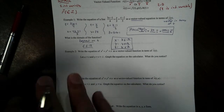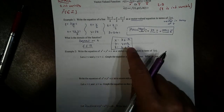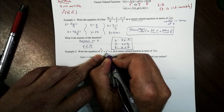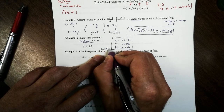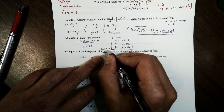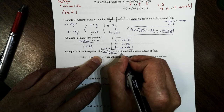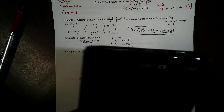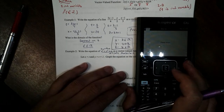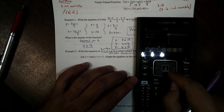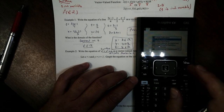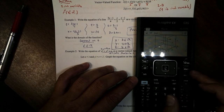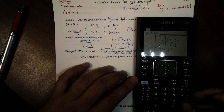Let's talk about how we can write a surface as a vector equation. This equation — x squared plus y squared plus z — is a surface; you might remember it as an elliptic paraboloid. Let me graph this. I'll open a new 3D graph, type in z equals x squared plus y squared, press enter, and you get our elliptic paraboloid.